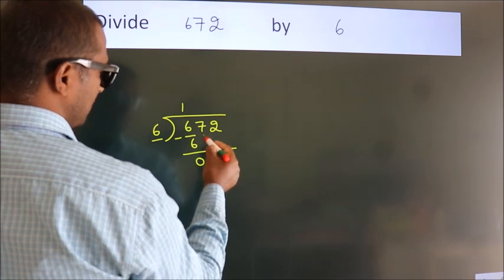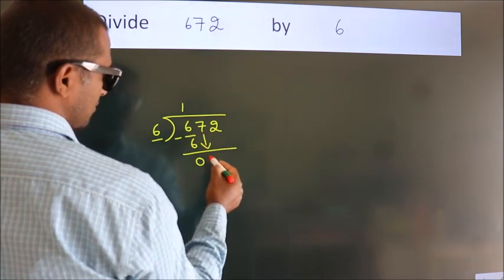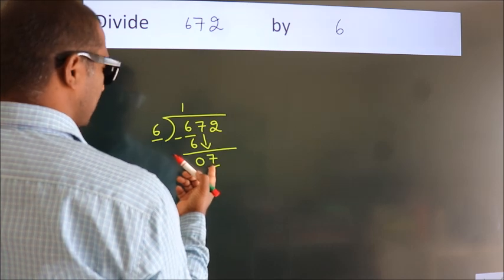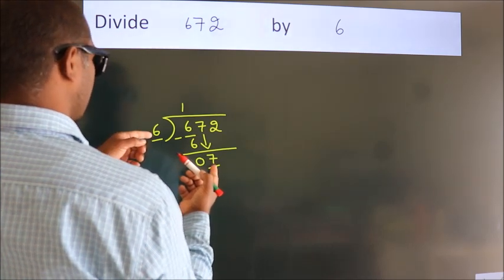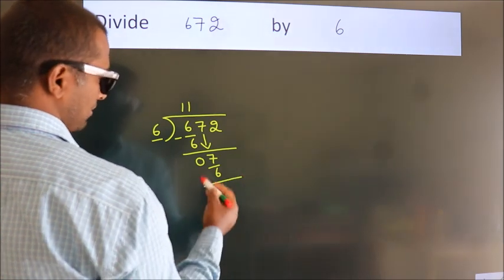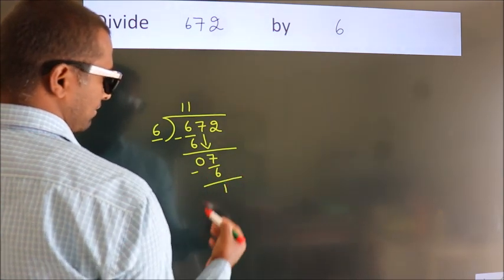After this, bring down the beside number, so 7 down, so 7. A number close to 7 in 6 table is 6 once, 6. Now, we subtract, we get 1.